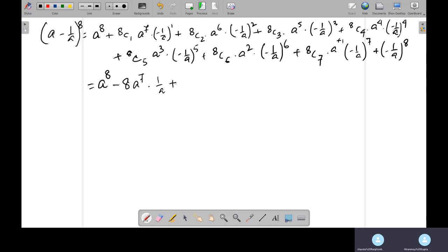Negative. So 8C2 is 28, so I'm writing 28, plus A to the power, sorry, times A to the power 6, 1 by A square. Now, this is negative 1 by A whole square, so negative times negative will be positive. Am I right? Yeah. So now we should not write plus, because it's an odd value, automatically it will come as a negative, because minus 1 by A whole cube, so it will come as a negative.